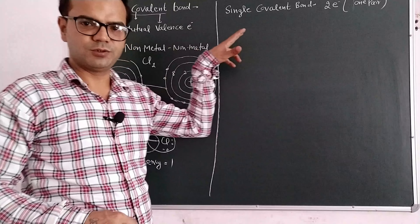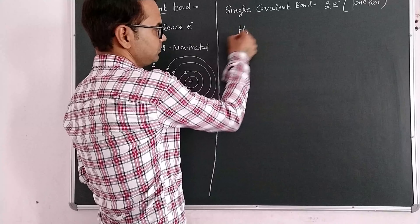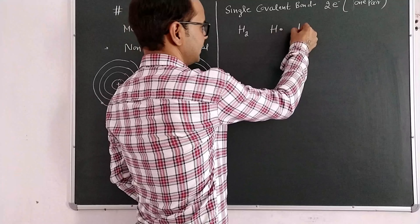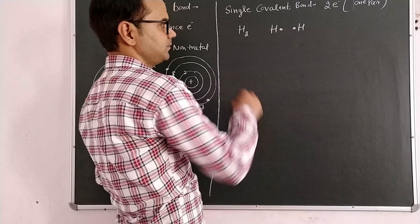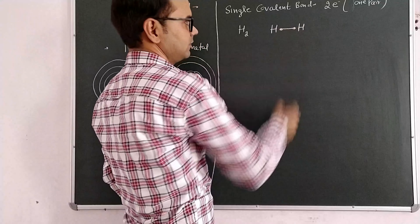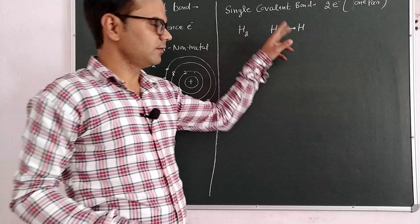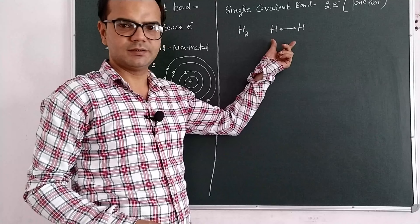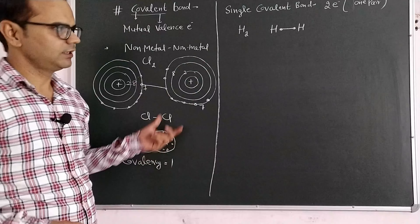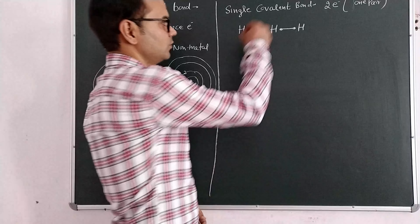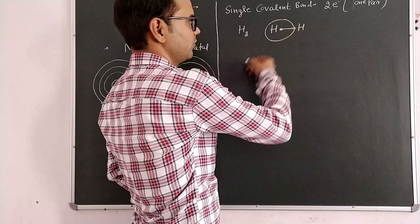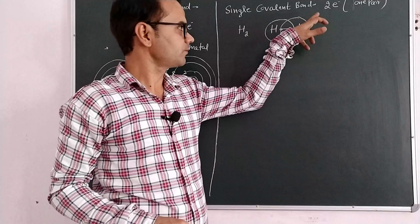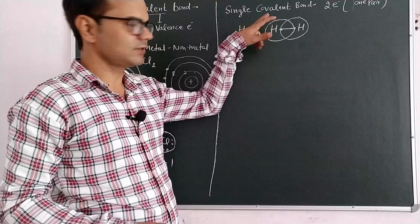Let us understand the formation of the H₂ molecule. The atomic number of hydrogen is one, so it contains one electron. The second atom also contains one electron. If they share electrons, hydrogen becomes stable by completion of the duplet. There are two ways to complete the electron configuration: duplet or octet. In hydrogen, there is completion of the duplet. So both hydrogen atoms form a single covalent bond.